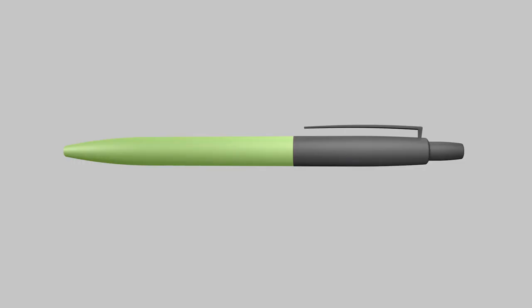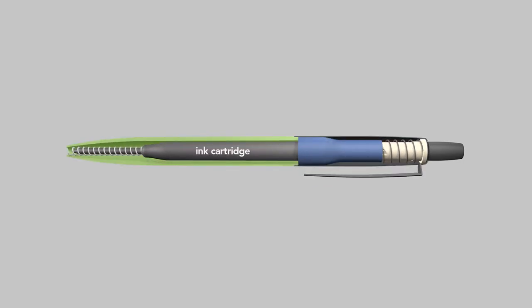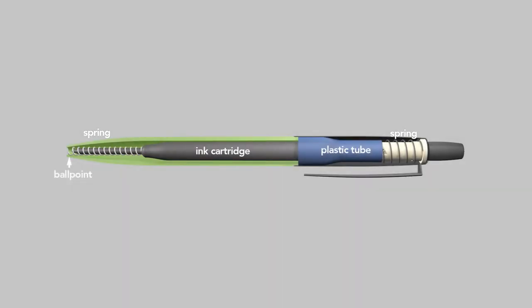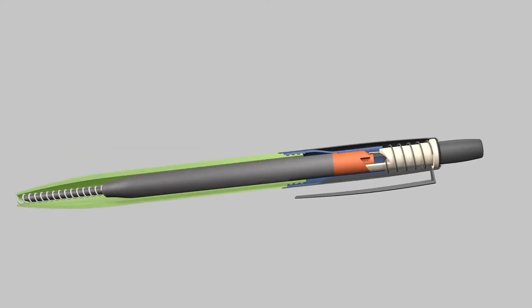To understand why these clicks occur, let's look inside. The pen's barrel houses an ink cartridge with a ballpoint tip, two springs, one at the top and one at the bottom, and a plastic tube which is press-fit inside the metal barrel of the pen so that it's fixed in place. Inside that tube is where all the action happens.